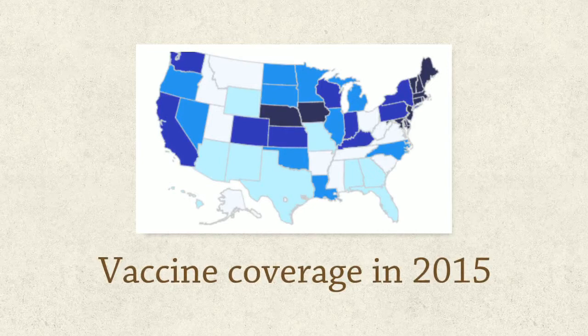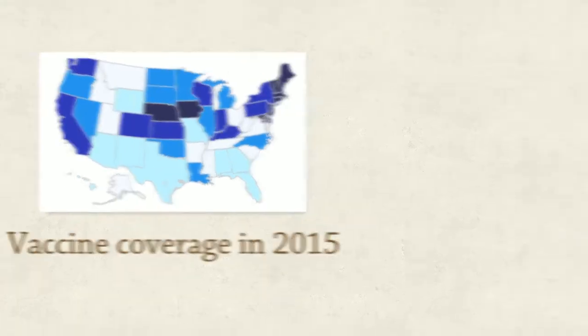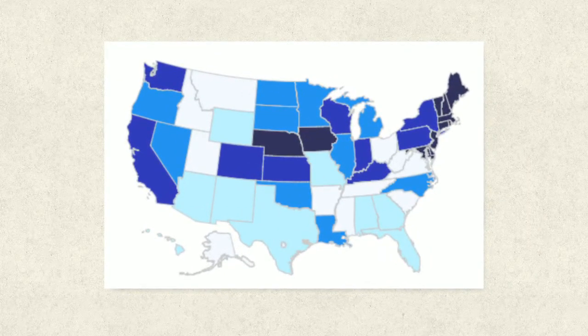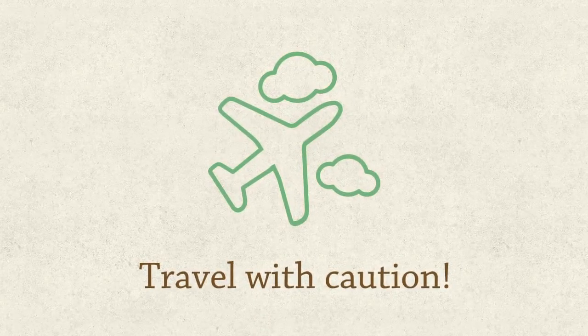Pictured here is the United States map that represents vaccine coverage for 2015 based on state and local area. The white states have a coverage percentage of about 75%. The lighter blue states have about 80%. The darker blue states have about 82%. The dark blue states have about 84%, and the navy blue states have a coverage percentage of about 86.5%. The main reason for outbreaks is travelers entering the United States, so if you travel to a different country, travel with caution.